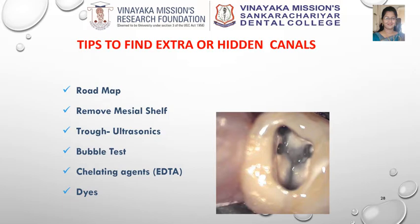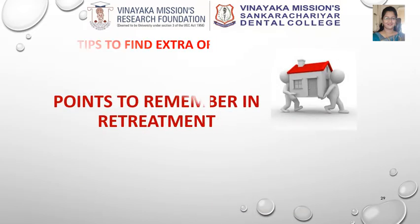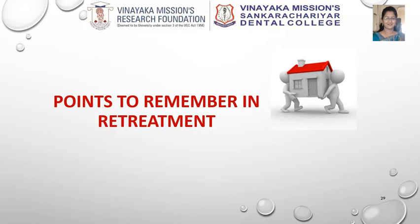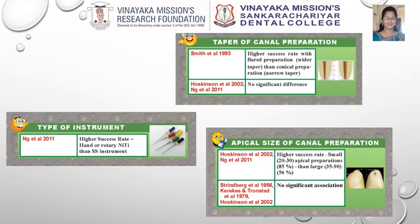Chelating agents like EDTA and dyes like methylene blue can also be used for this purpose. There are certain points to be kept in mind during the retreatment procedure, derived from several studies. Wider taper when compared with narrow taper, NiTi instruments when compared with stainless steel instruments, and smaller apical preparations are found to increase the success rate of retreatment.